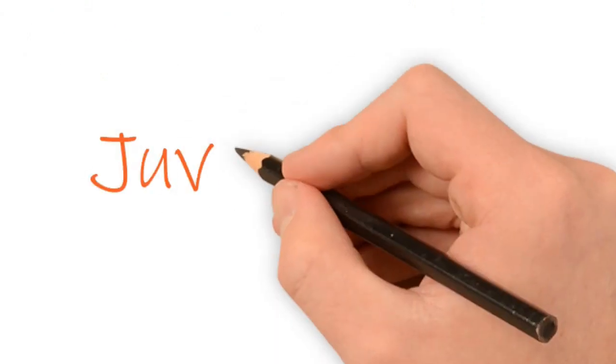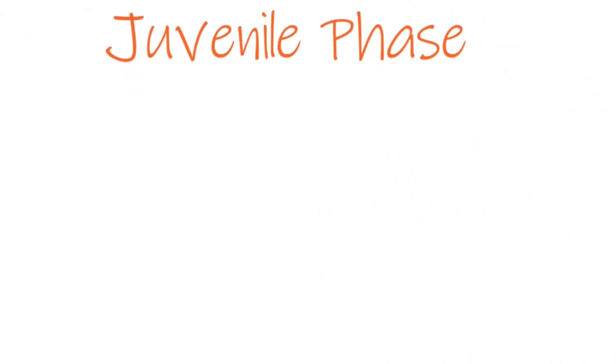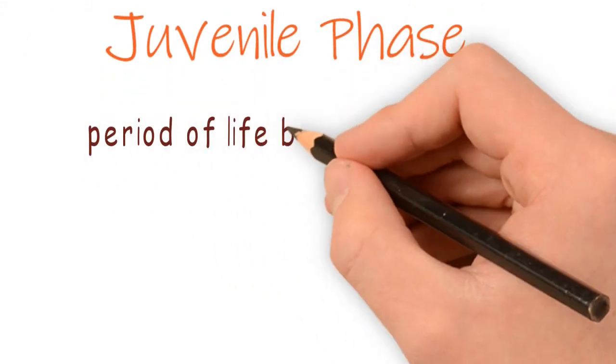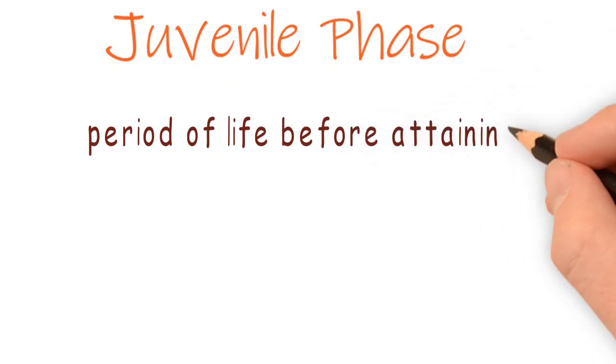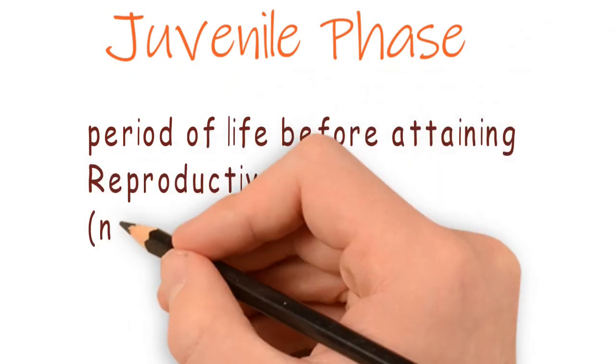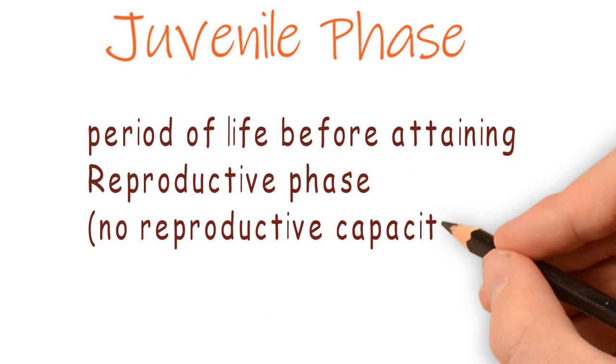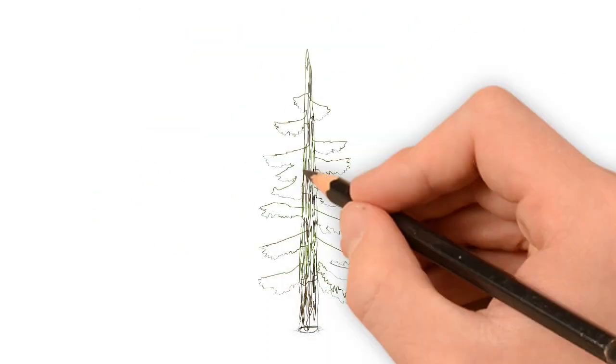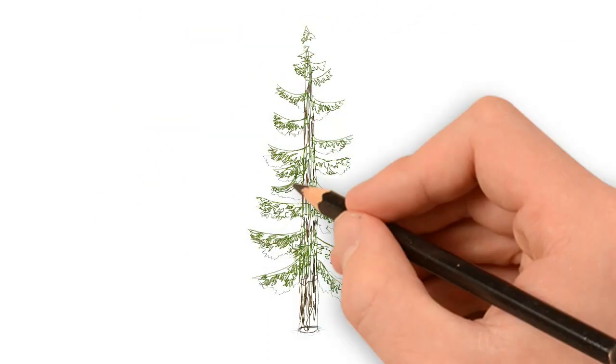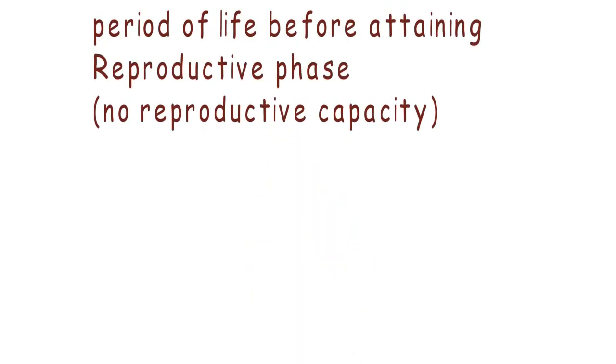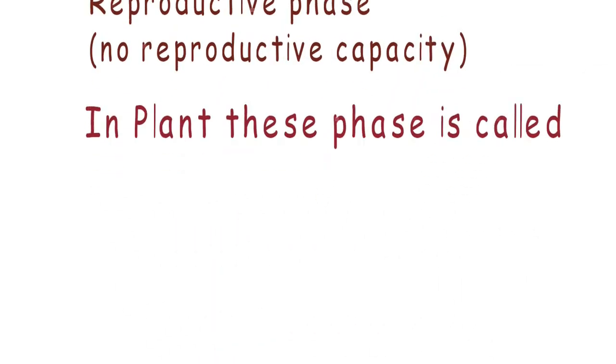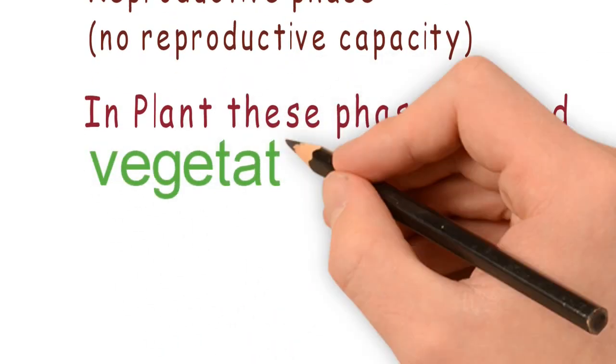What is juvenile phase? The period of life before attaining reproductive phase is called juvenile phase. The organisms are reproductively inactive in this phase - no reproduction takes place. In case of plants, this phase is called vegetative phase.